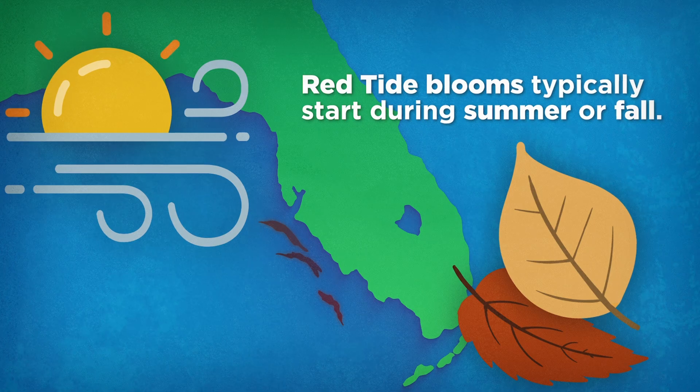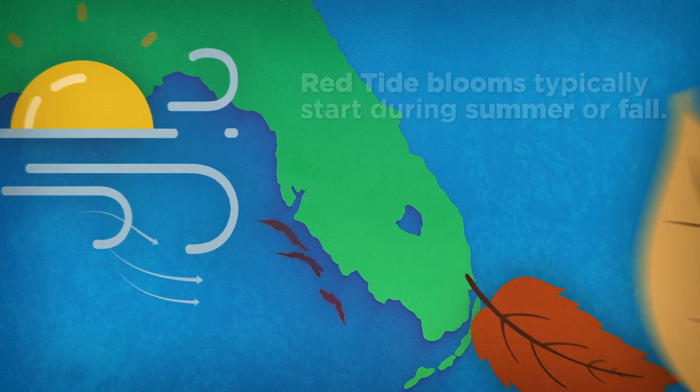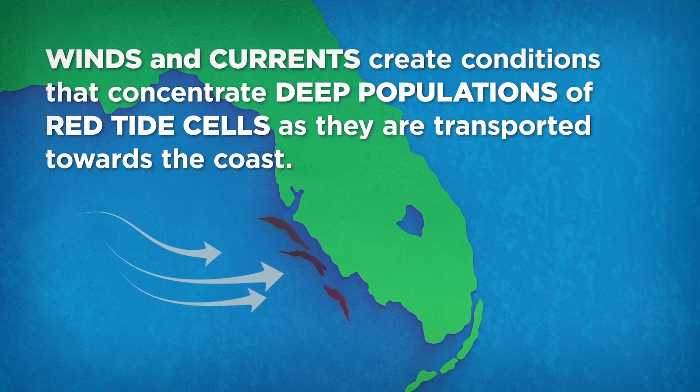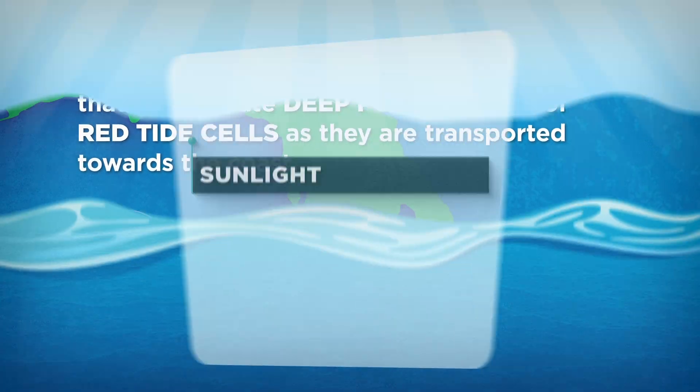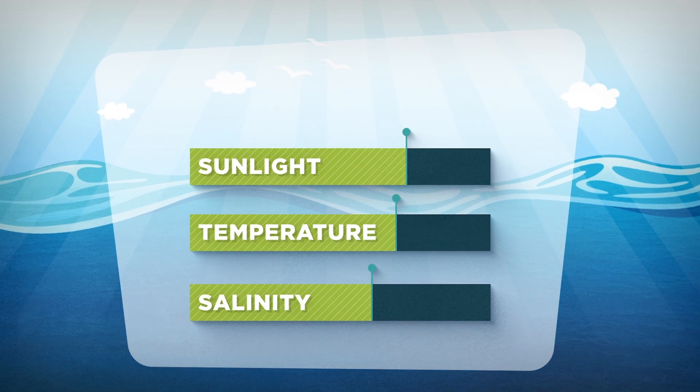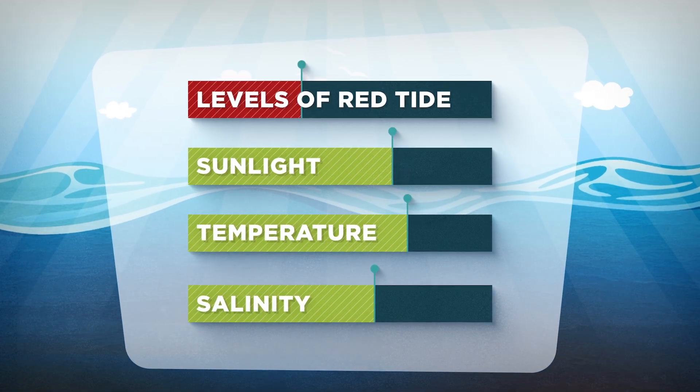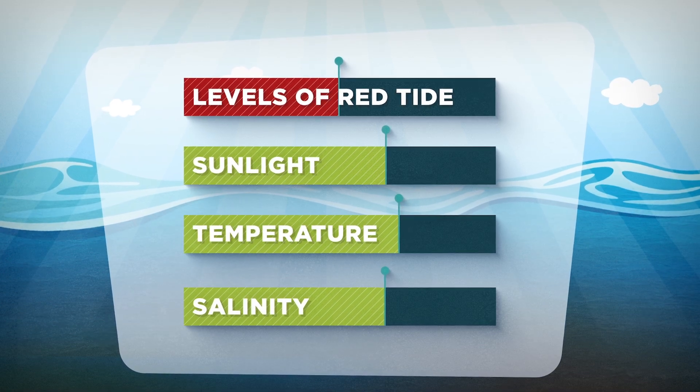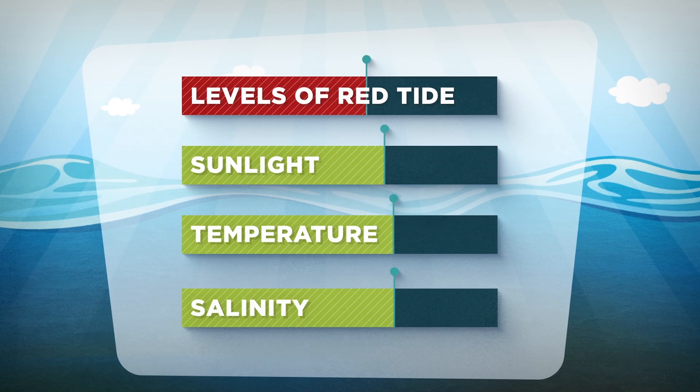Blooms typically start during summer or fall when winds and currents create conditions that concentrate deep populations of red tide cells as they are transported towards the coast. Sunlight, temperature, and salinity are important for growth. Levels of red tide along the coast begin to rise as cells divide in response to the availability of a wide array of natural and man-made nutrient sources.